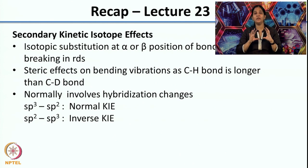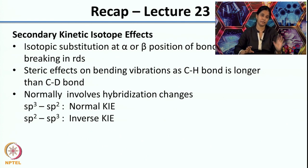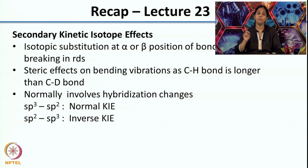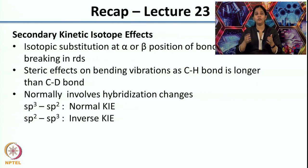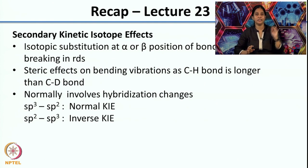Usually you see secondary kinetic isotope effects when there is some sort of hybridization change. When you have a reaction which involves a change from sp3 to sp2, you see what is called a normal kinetic isotope effect, that is KH would be greater than KD. But when you have sp2 going to sp3, what you see is called an inverse kinetic isotope effect where KD is actually greater than KH, and the explanation for all of this was seen in the previous class.